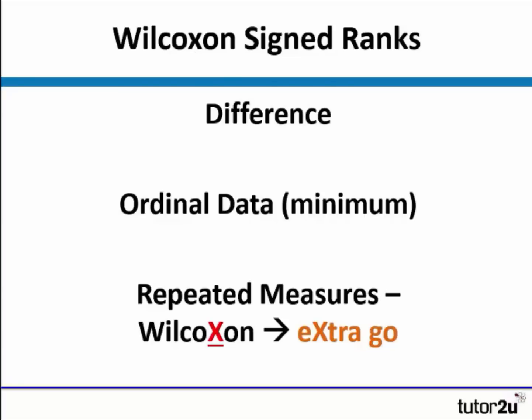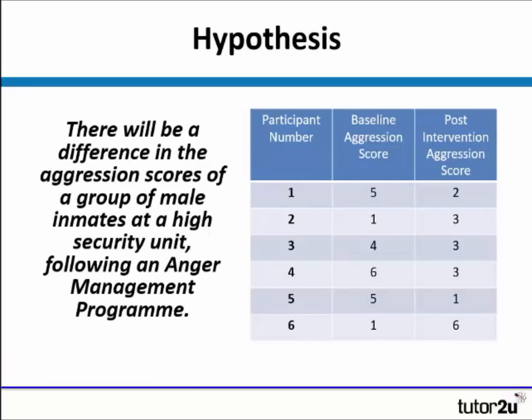The way we remember that Wilcoxon uses repeated measures design is that it has an X in it, so the participants are getting an extra go because they're repeating the study. Our hypothesis is whether or not there will be a difference in the aggression scores of a group of male inmates at a high security unit following an anger management program. It's repeated measures because we take a baseline aggression score and then look at their scores after an intervention.